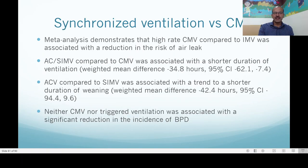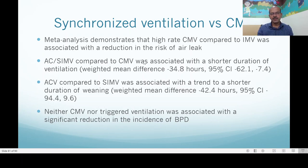In terms of mechanical ventilation, synchronized ventilation meta-analysis demonstrates that high-rate CMV compared to IMV was associated with reduction of air leak — these are old studies, as we no longer use CMV, but this is the origin of high-rate ventilation in babies. Assist control or SIMV compared to CMV was associated with shorter duration of ventilation and a trend to shorter weaning. Neither CMV nor triggered ventilation was associated with a significant reduction in BPD incidence — difficult to show even though we believe synchronized ventilation is better.